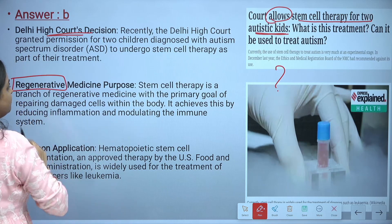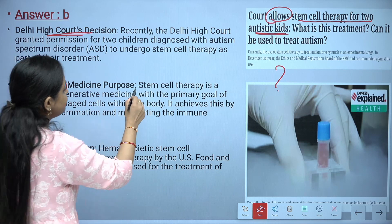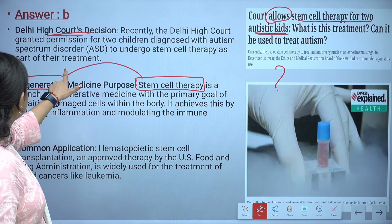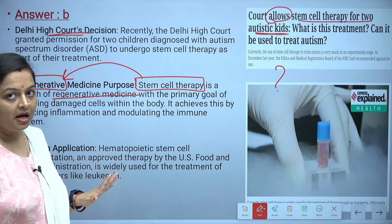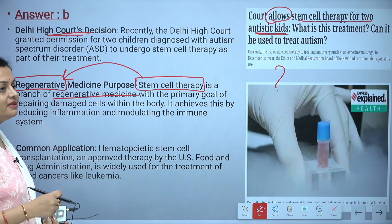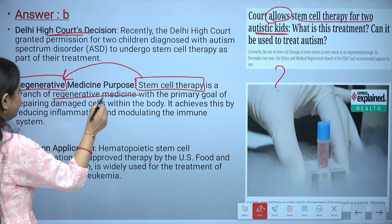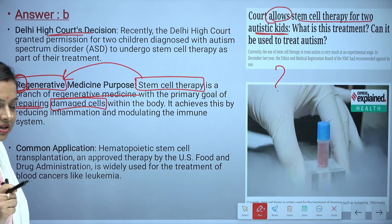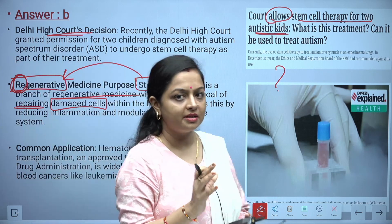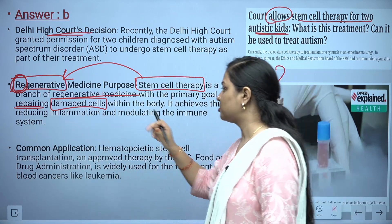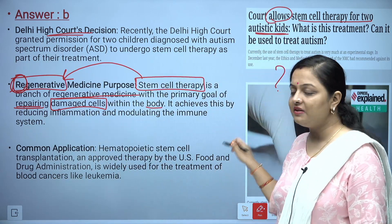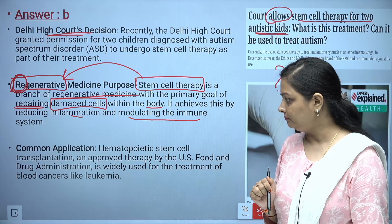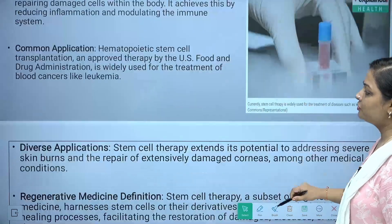Regarding regenerative medicine: stem cell therapy is a branch of regenerative medicine. The goal is to repair damaged cells within the body — from the name itself, 'regenerative' means generating something that was there earlier, i.e., repairing damaged cells. It achieves this by reducing inflammation and modulating the immune system.